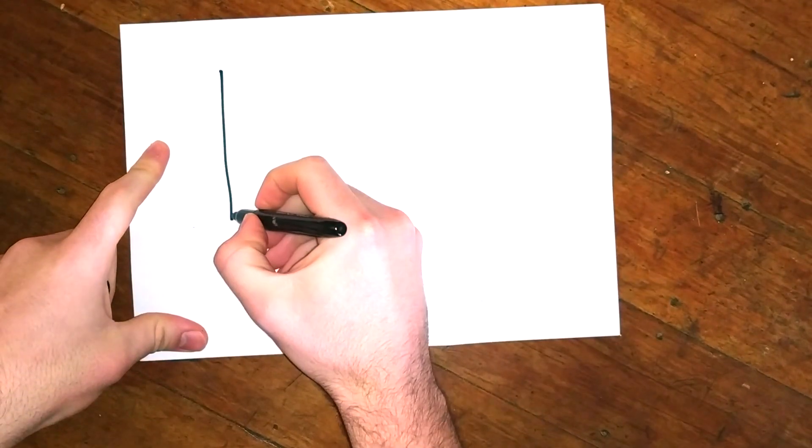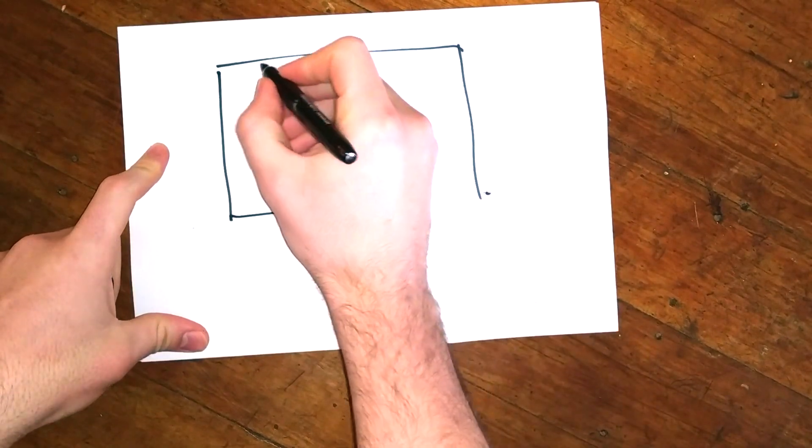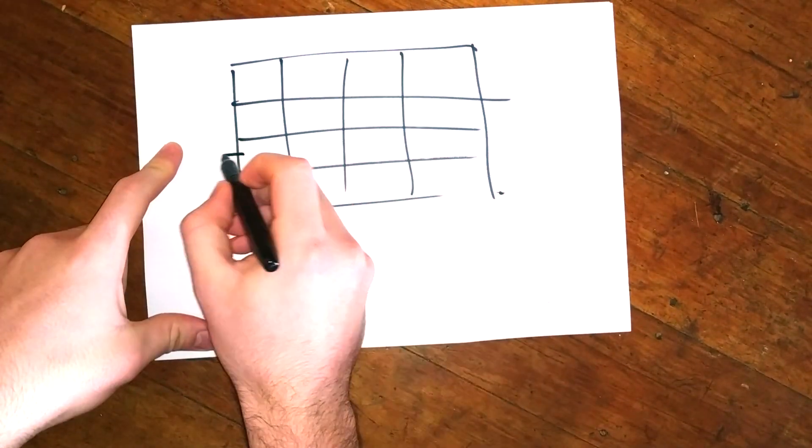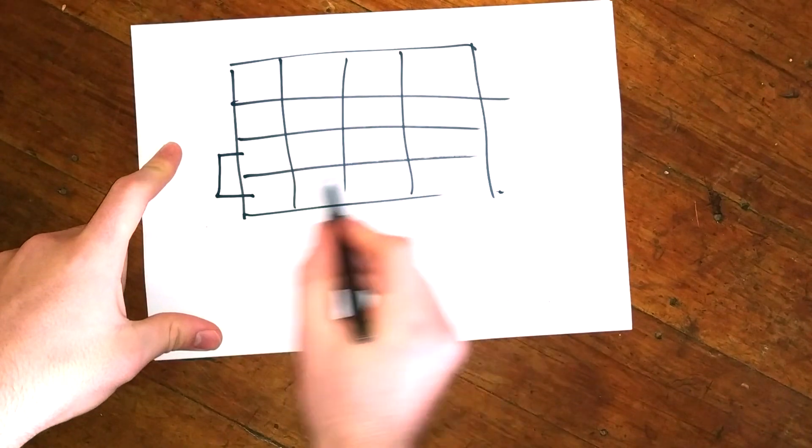So I thought I would give a quick explanation of what an auto chess game is. Normally you just have a board and you can normally place your pieces in this part of the board and the other team can put theirs in here.